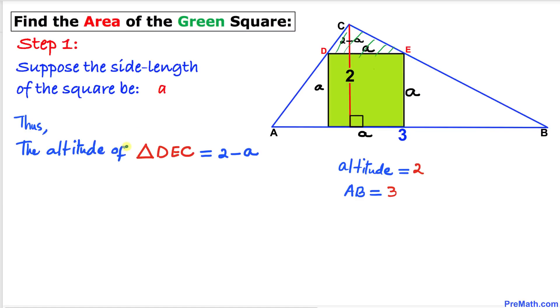Thus we conclude that the altitude of this smaller triangle, the shaded one triangle DEC, is 2 minus A.